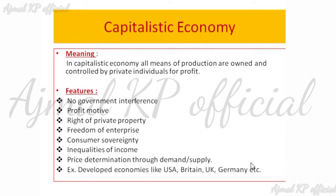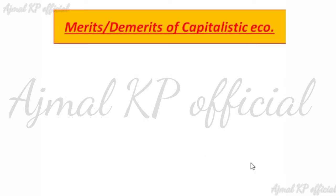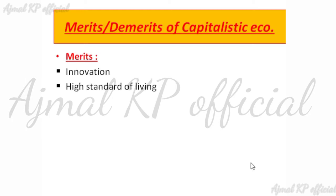Examples of capitalist economies include developed economies like USA, Britain, UK, and Germany. We can check what are the merits and demerits of the capitalist economy. First we will discuss what are the merits. Its major merit is innovation — we can build according to whatever the requirements, whether small scale or large scale industries.